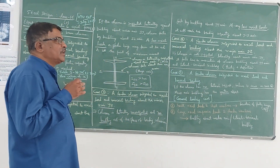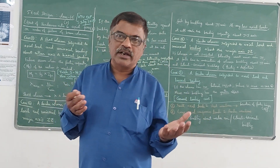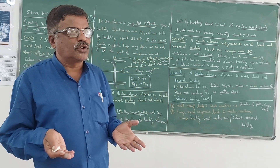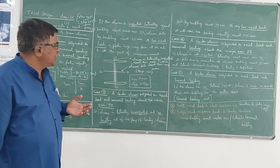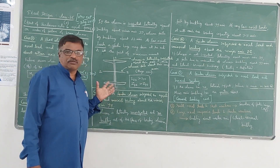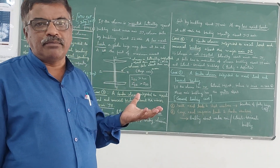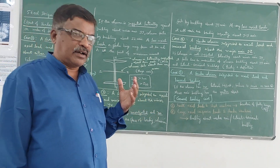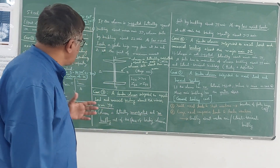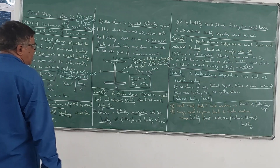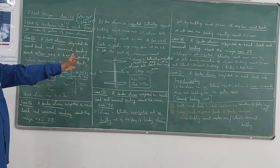Whenever you have a beam column — whether it is a beam, a column, a slab, or a beam column — you should be in a position to identify the types of modes of failure: whether the member fails by compression, by bending, by tension, or by buckling.